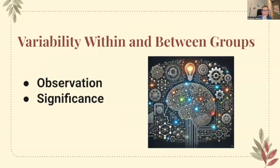The implications of the Flynn effect suggest that intelligence is not solely a matter of genetic inheritance, but is significantly shaped by the conditions and experiences to which a person is exposed during their lifetime. Here's our nature versus nurture discussion that we talked about in unit one. Research also shows that IQ scores tend to vary more within a single group than between groups.